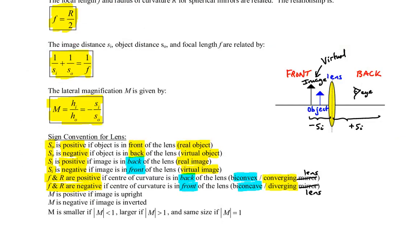The rest is pretty much the same: if M is positive you have an upright image; if M is negative it's inverted — same as with mirrors. M less than 1 means smaller, greater than 1 means larger, and equal to 1 means the same size. The key difference is really where the image forms and that convex lenses are converging, with the primary focal point behind the lens — the opposite of mirrors.